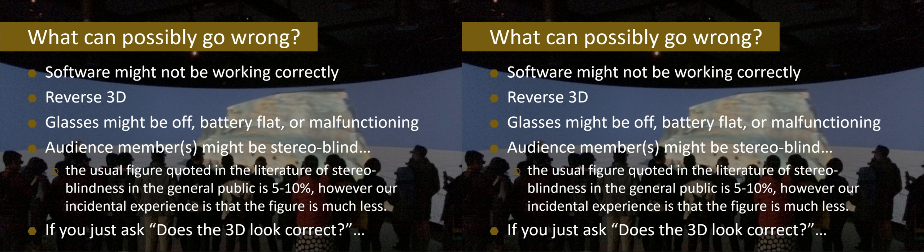So what can possibly go wrong when you're doing a 3D demonstration? The software might not work correctly, it might not switch into 3D, or it might go into reverse stereo. The glasses might turn off — these are active glasses, so each individual pair might develop an individual problem. Someone might press the button as you hand it to them and turn it off, the battery might be flat, or they might just be malfunctioning. We want everyone to have a good experience, so we want to catch things when they do occur.